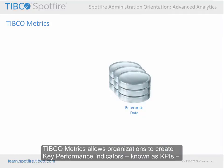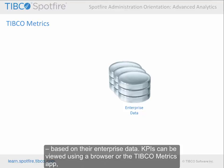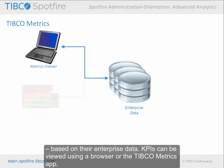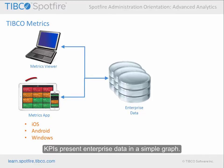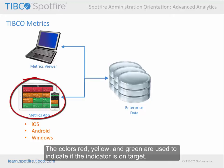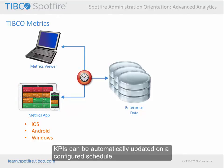TIBCO Metrics allows organizations to create key performance indicators, known as KPIs, based on their enterprise data. KPIs can be viewed using a browser or the TIBCO Metrics app, which is available for iOS, Android, and Windows devices. KPIs present enterprise data in a simple graph. The colors red, yellow, and green are used to indicate if the indicator is on target. KPIs can be automatically updated on a configured schedule.